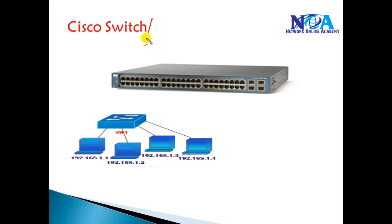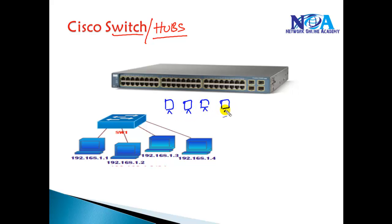Hubs are not really used in today's networks, but we'll talk about their drawbacks in a separate section called switching concepts. A hub or switch is a device which provides a centralized location where you can connect all your computers. For example, if you have four or five computers in a LAN and want them to communicate, you bring one cable from the switch to each PC. The switch provides that centralized connection point for all computers in the LAN.